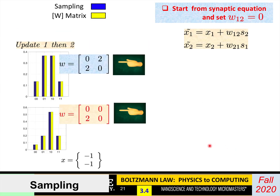When you do this problem — Bayesian in the sense that you have W21 but no W12 — and compare with the reciprocal Boltzmann case where W12 equals W21, you can see the response has changed and looks different. In either case, the sampling method and the W matrix method agree. So the W matrix method describes this sampling procedure for all kinds of networks very well.